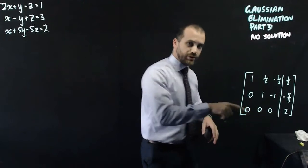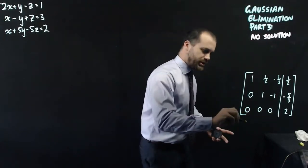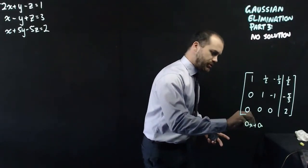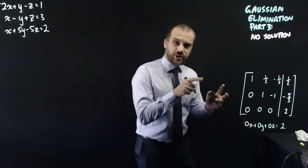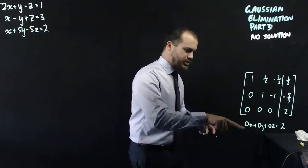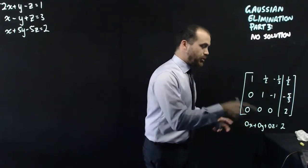Now, if I write this final line as an equation, it really says 0x plus 0y plus 0z equals 2. That's a contradiction, right? Because that's just 0, 0 equals 2.